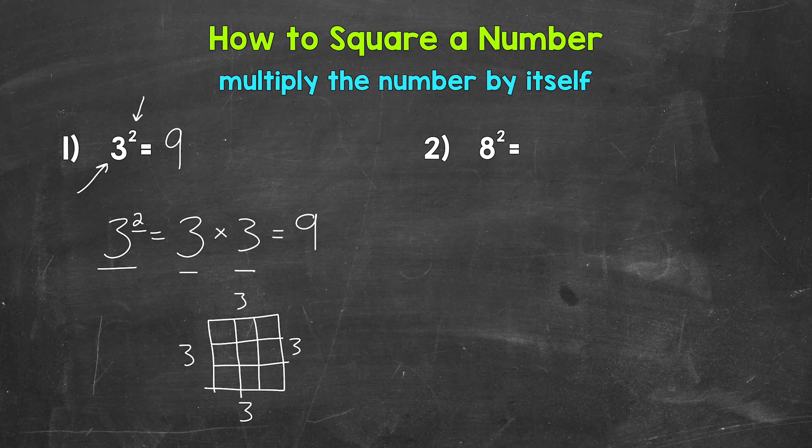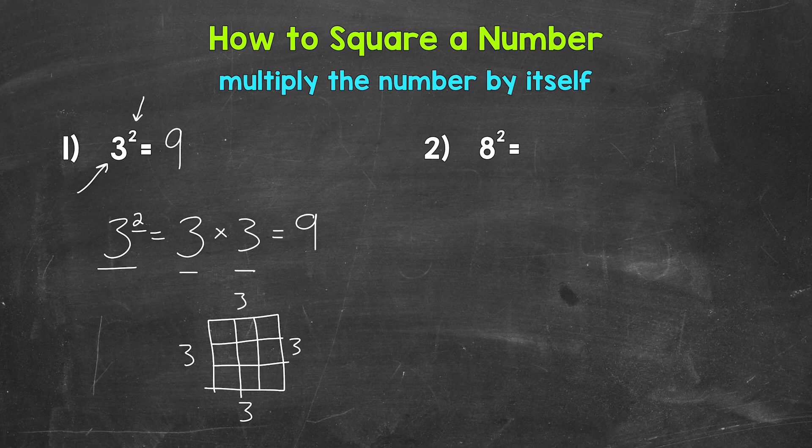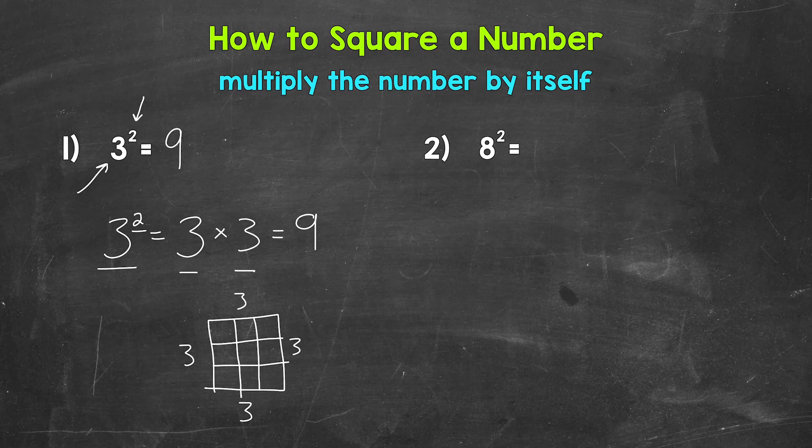We can square a side length to find the area of a square. So you can see the relationship between squaring a number and the area of a square.